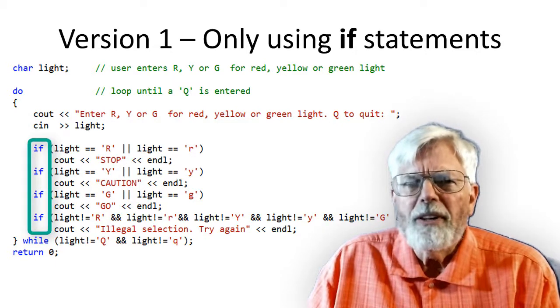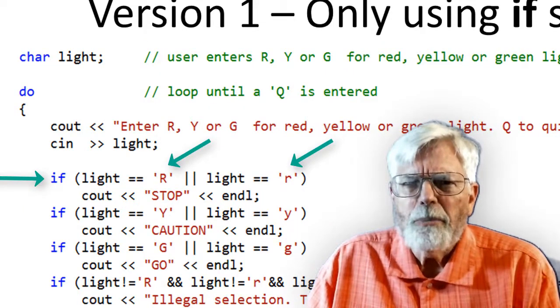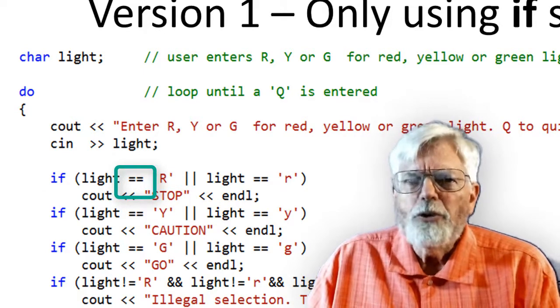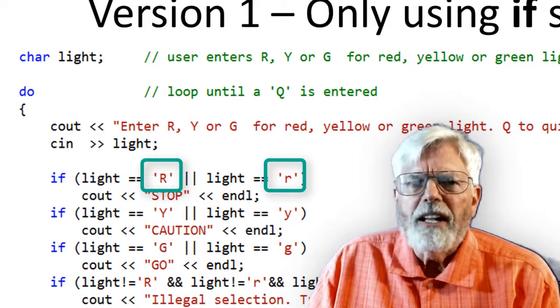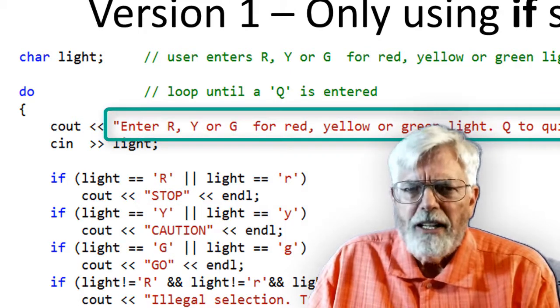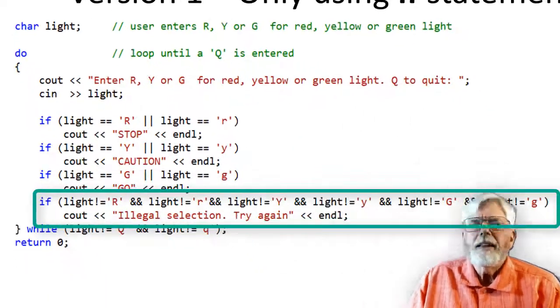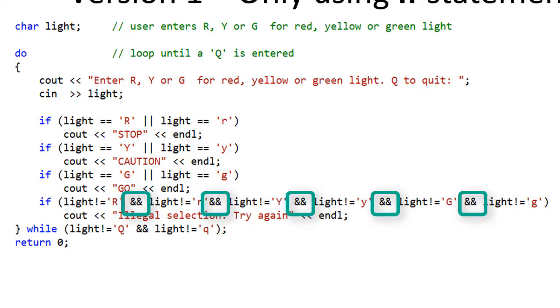This version of the program uses only if statements. A separate if statement is used to check for either an uppercase or lowercase character input. The double equal operator, equal equal, is used to compare the character in the variable named light to a single character literal. The single quotes in C and C++ are used to identify a single character literal. The double quotes are used in C and C++ to identify a character string. The last if statement checks to make sure that only legal inputs are made. If anything except big R, little r, big Y, little y, big G, or little g is input, an error message is displayed. The use of the logical AND ampersand ampersand may look a little strange here, but more on this later in the video.